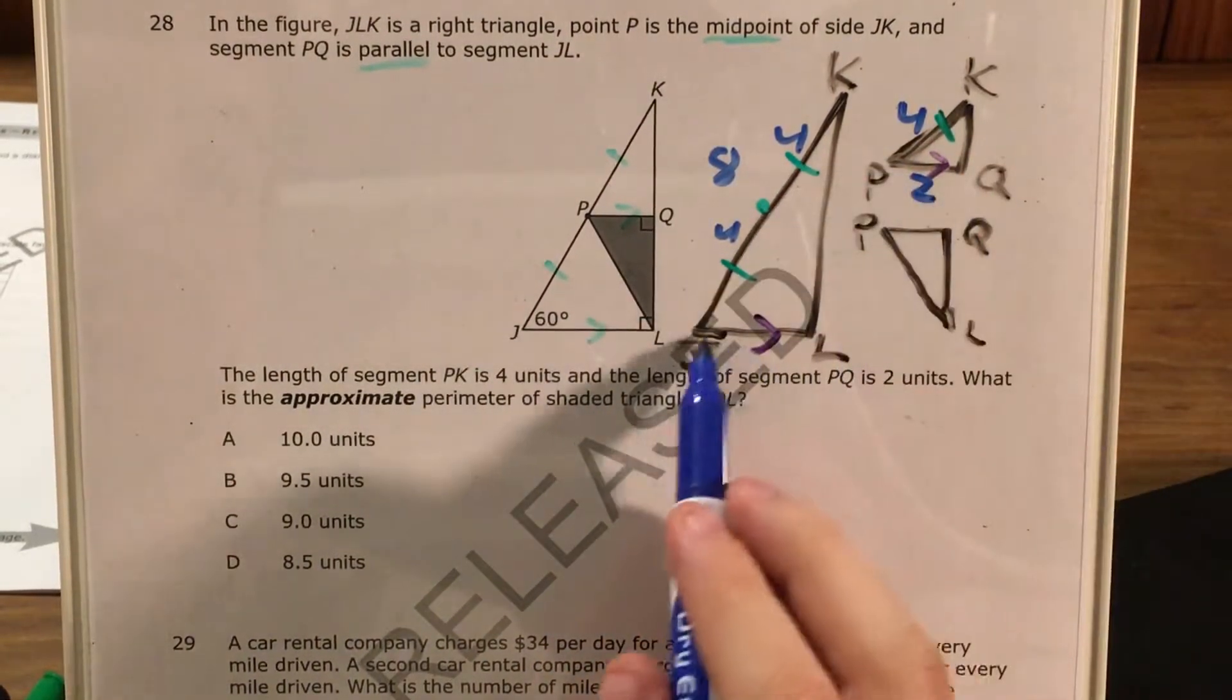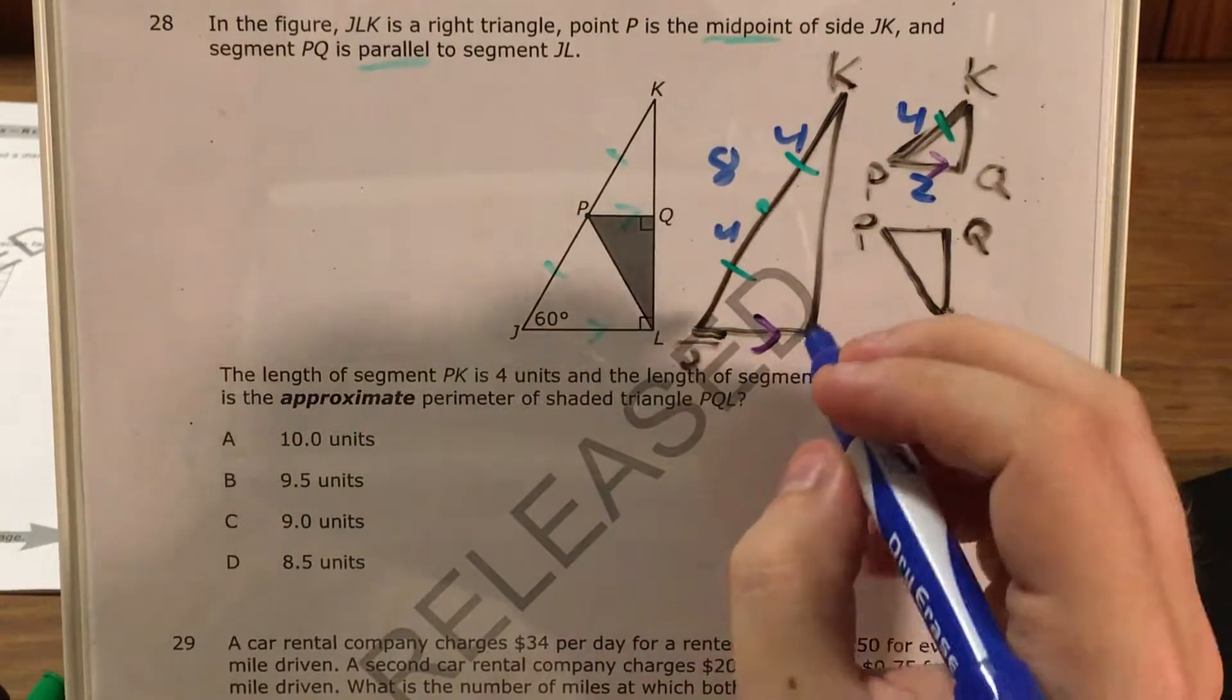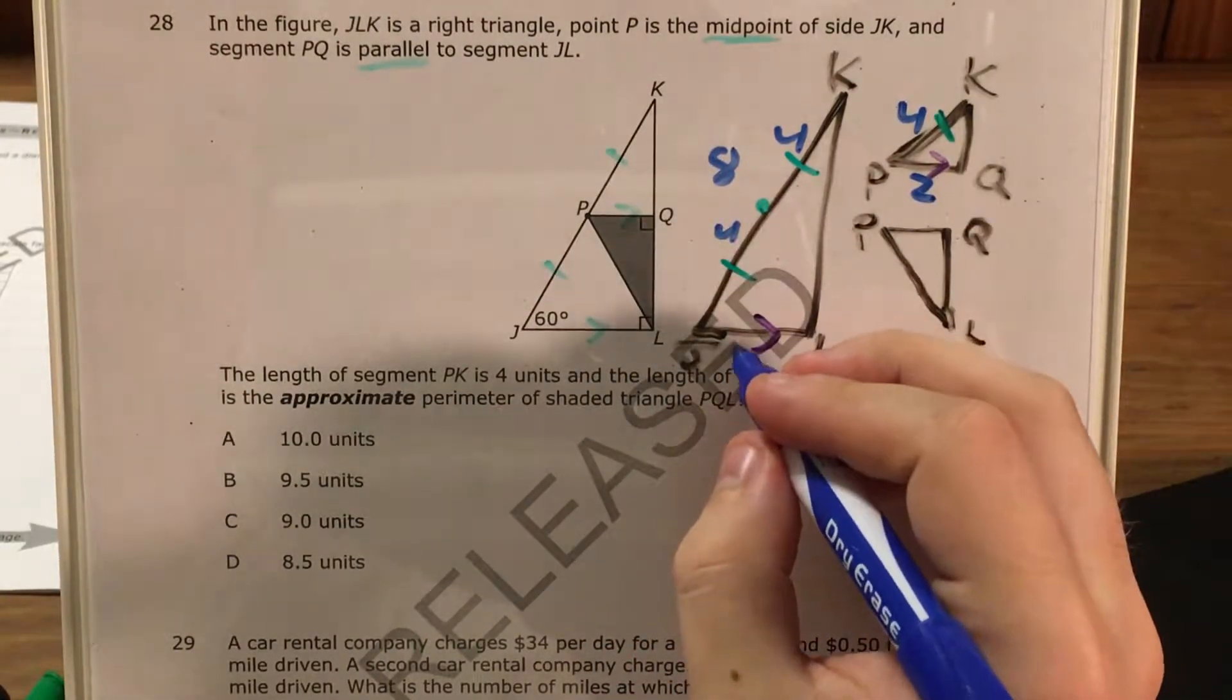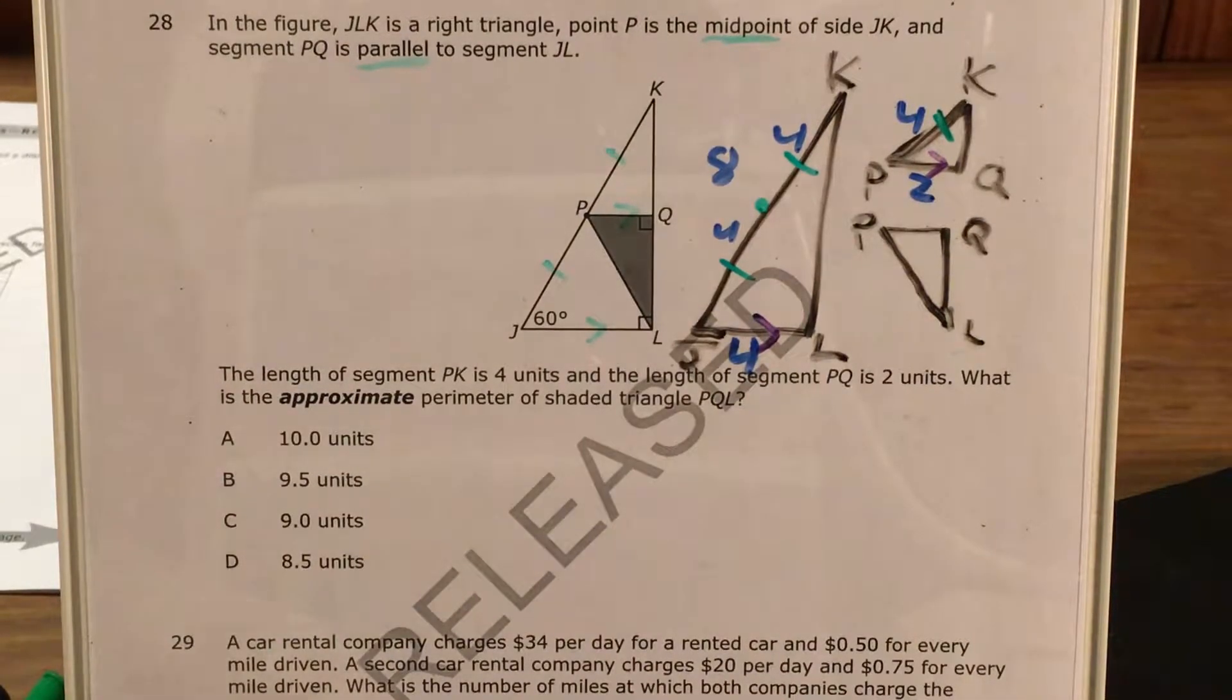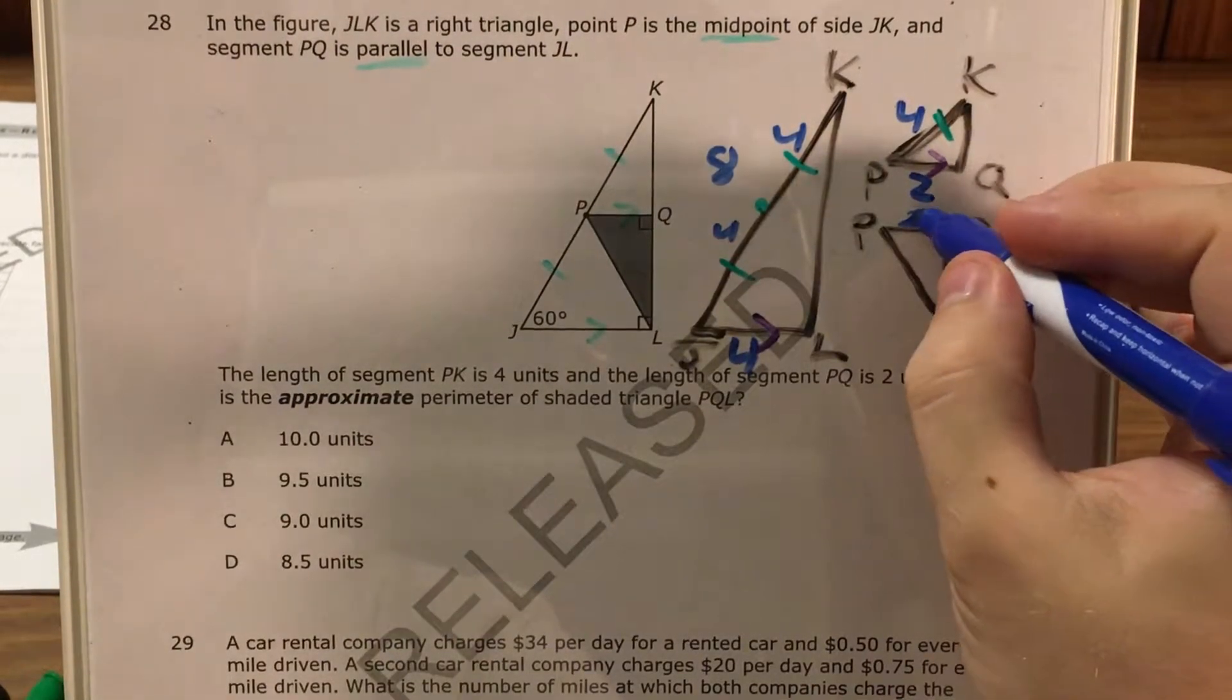Now if this one's 2, the corresponding side is this parallel one, JL, and that's double 2. So that one's actually gonna be 4. If this one's 2, then this one's 2.